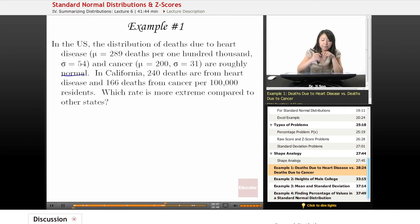That's very important. So we know that we could use our normal distribution stuff. In California, 240 deaths are from heart disease and 166 deaths are from cancer per 100,000 residents. Which rate is more extreme compared to the rest of the states, the average for the U.S.?